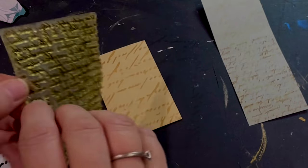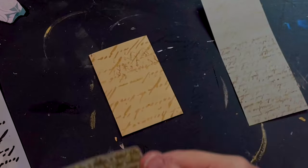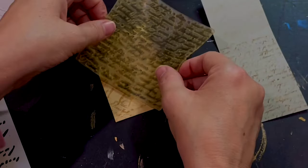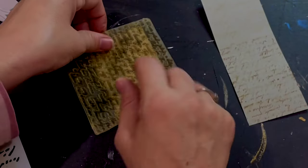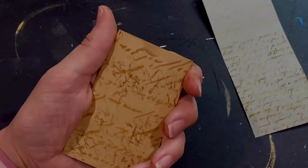And then I just stamped over with a random script stamp and on the envelope I kind of did it in different directions so that it didn't matter which way I put it in the book. I can put it up and down or across. Although at the end you'll see I kind of changed my mind on that.